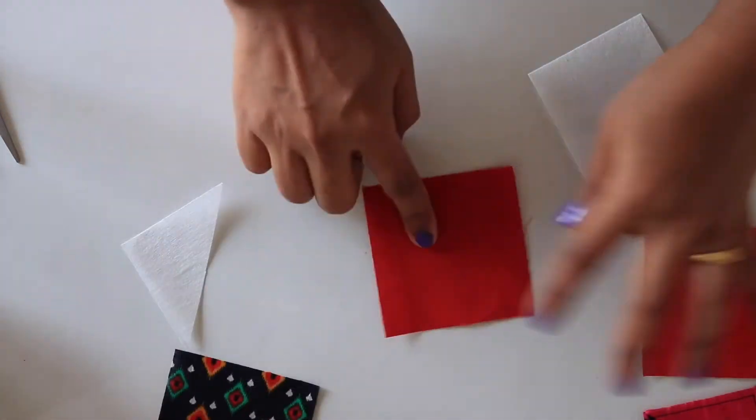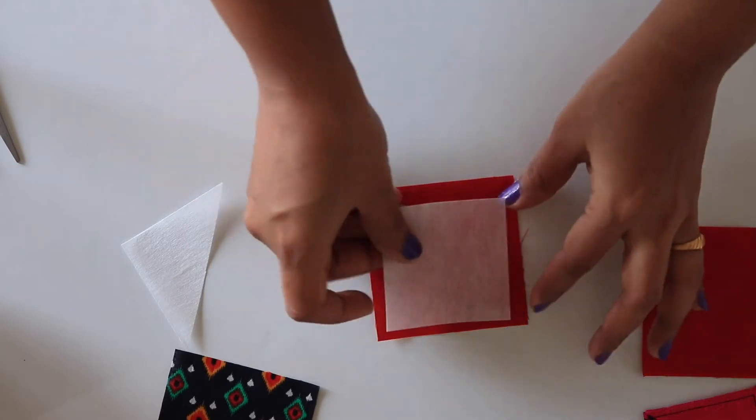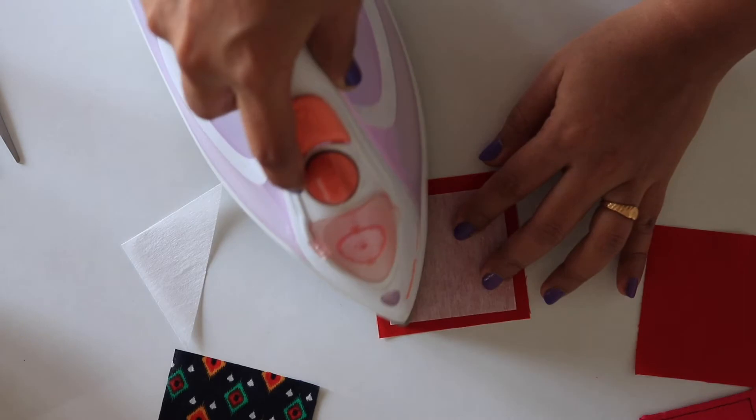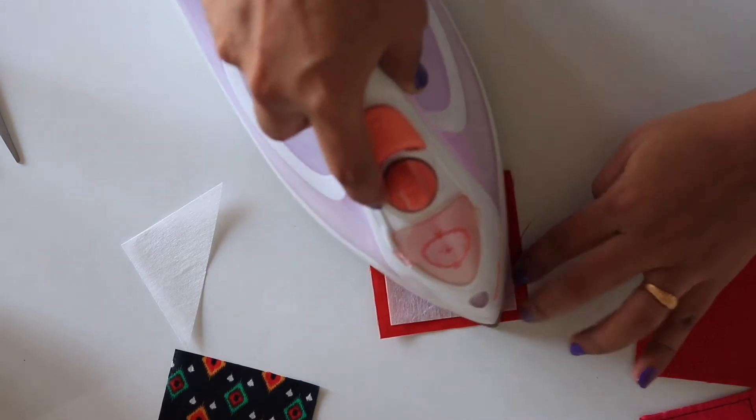Lay 1 fabric square with wrong side facing up. Then place square interfacing on top of it and fuse it with iron.